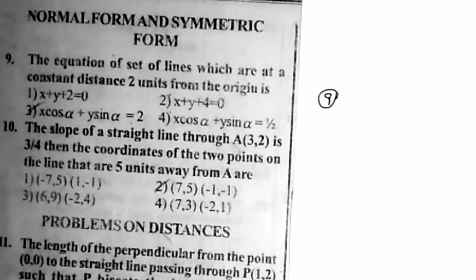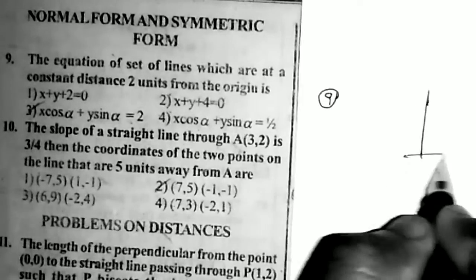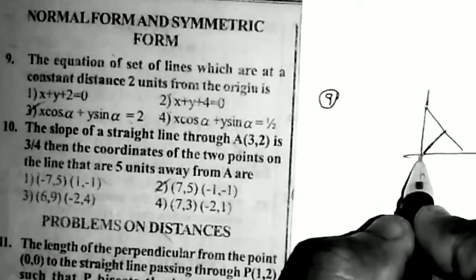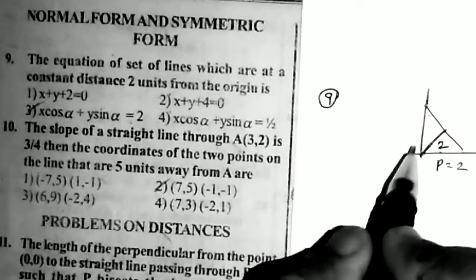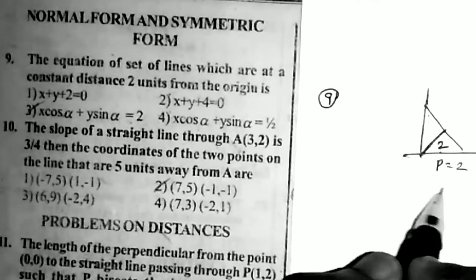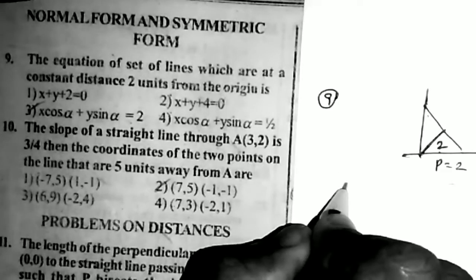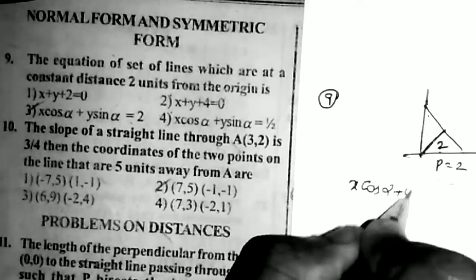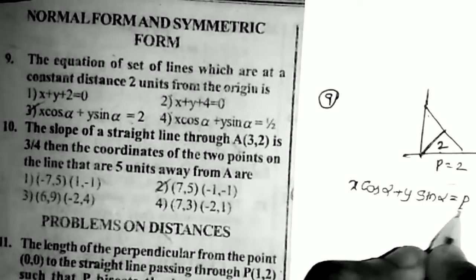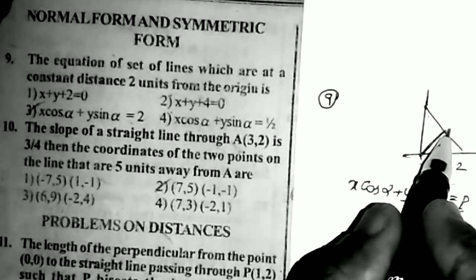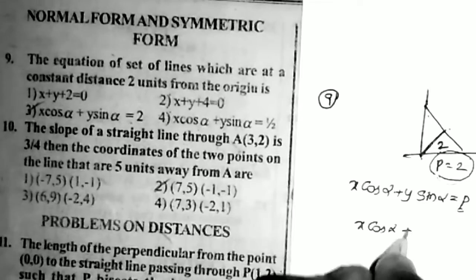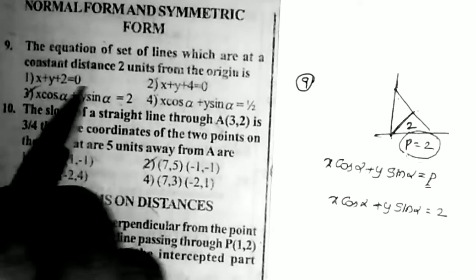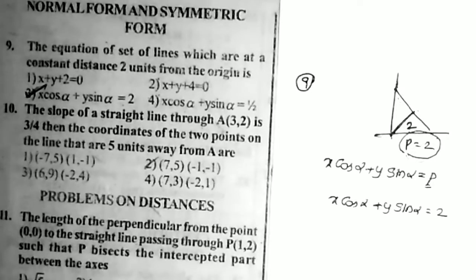Sum number 9: find the equation of the set of lines which are at a constant distance of 2 units from the origin. The lines are at a distance of 2 units from the origin, so p = 2. Using the normal form of a line: x cos α + y sin α = p. Since p = 2, the equation is x cos α + y sin α = 2.